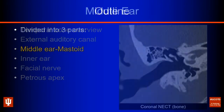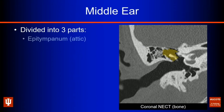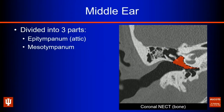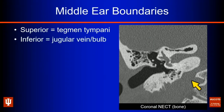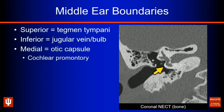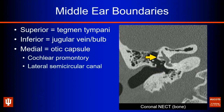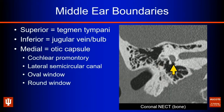Next, we'll talk about the middle ear and mastoid. The middle ear is divided into three parts: the epitympanum or attic — defined by a line from the scutum to the facial nerve canal; the mesotympanum — defined above the tympanic annulus line; and below that, the hypotympanum. In terms of middle ear boundaries, superiorly we see our tegmen tympani; inferiorly, the jugular bulb; and medially, the otic capsule with landmarks including the cochlear promontory, lateral semicircular canal with thin otic capsule coverage, oval window, and round window.